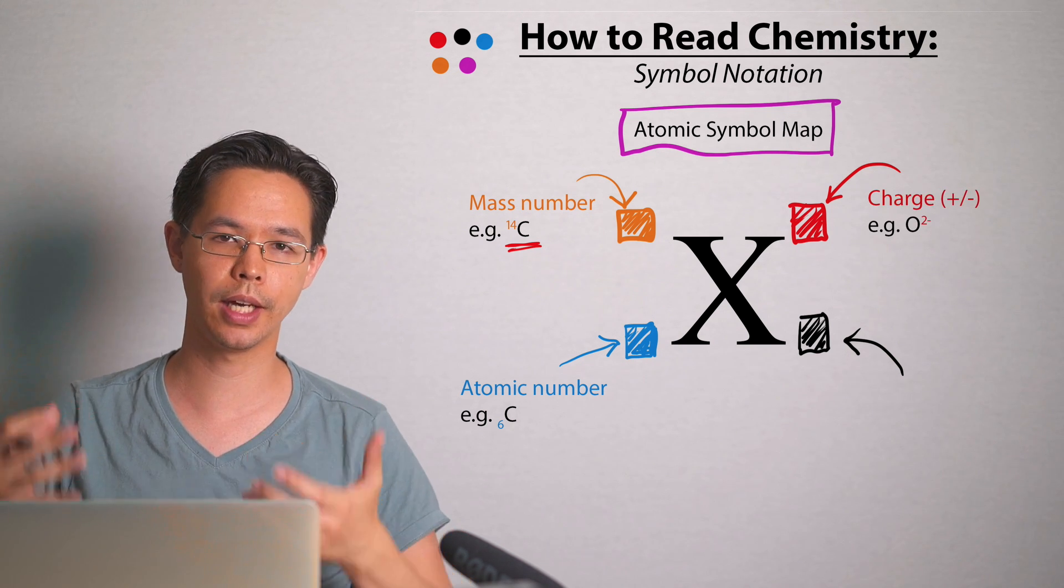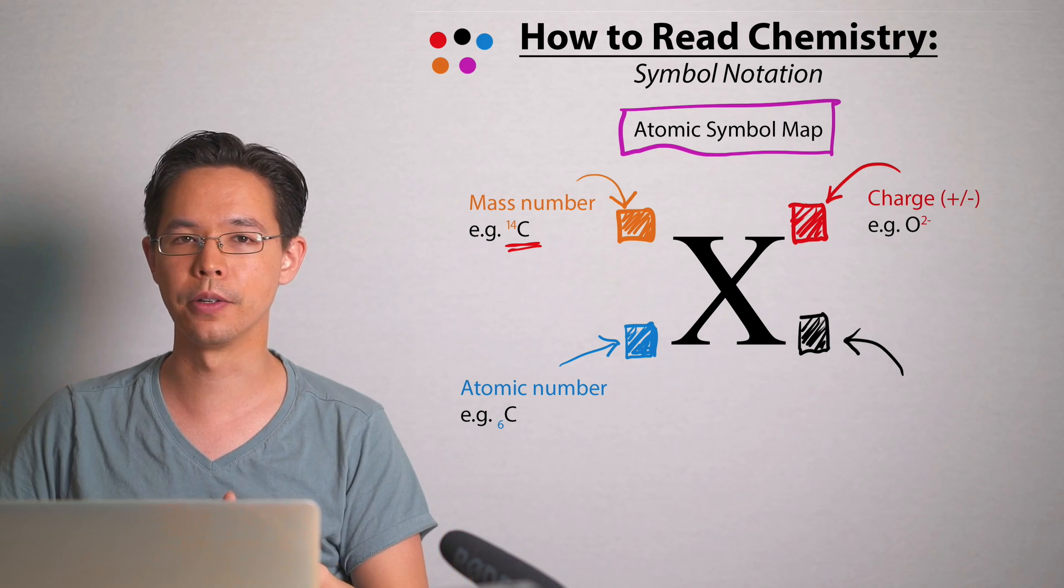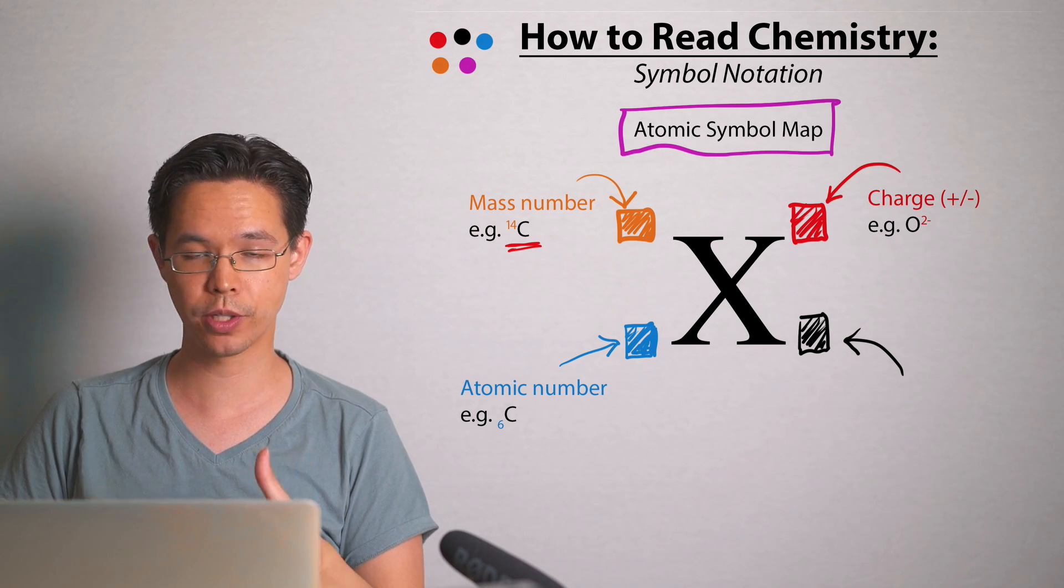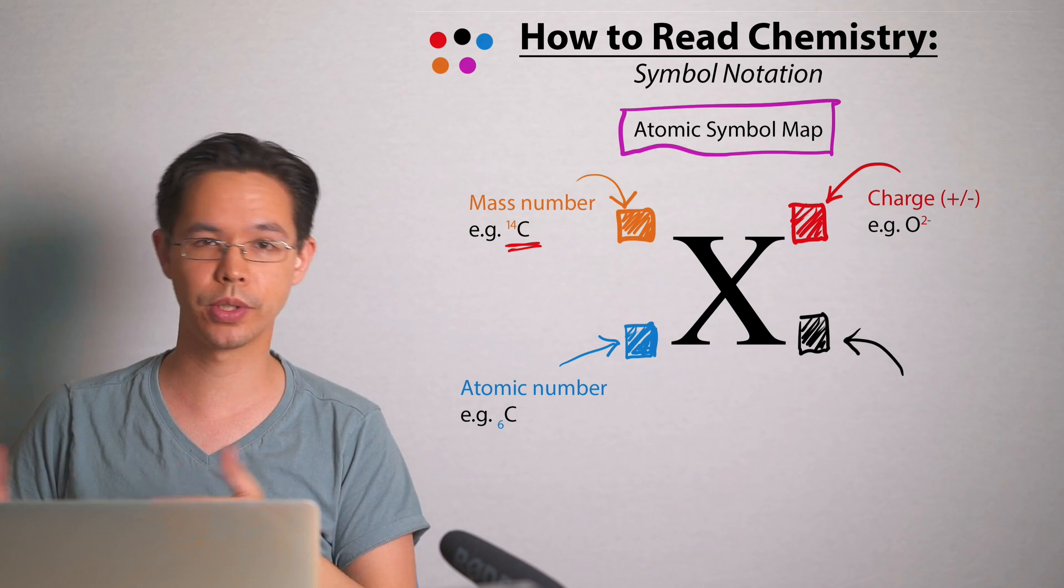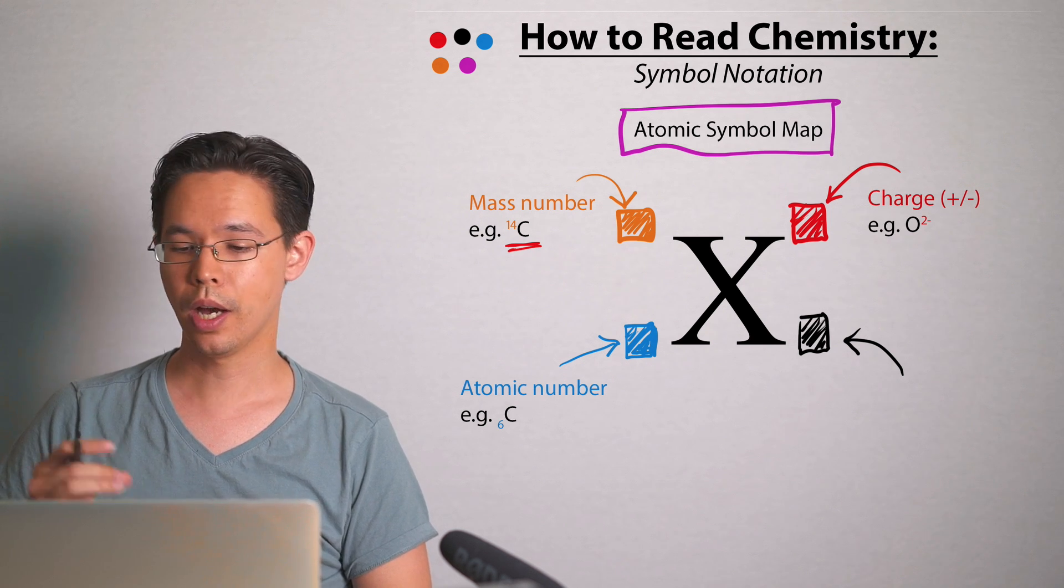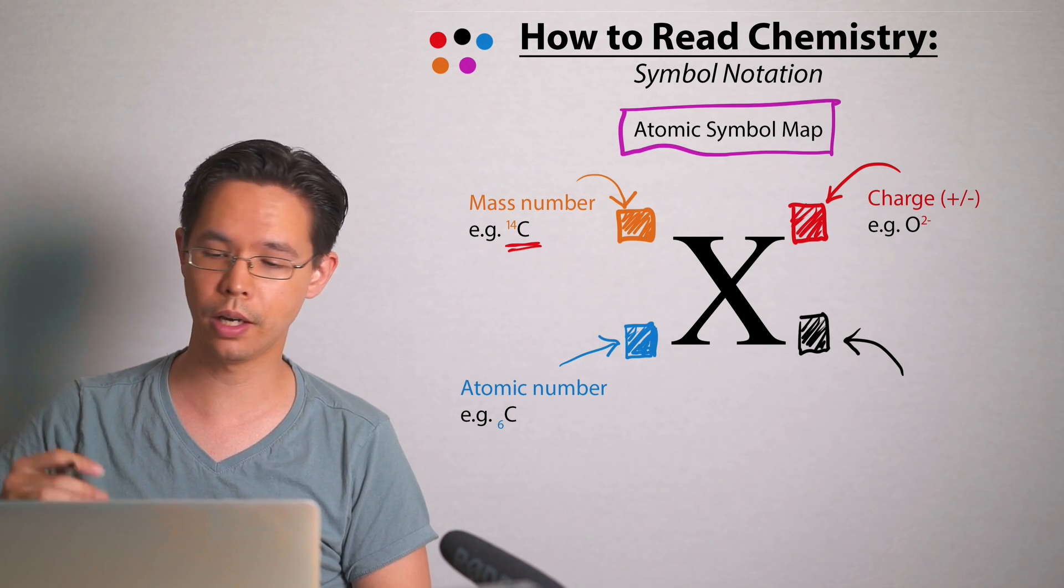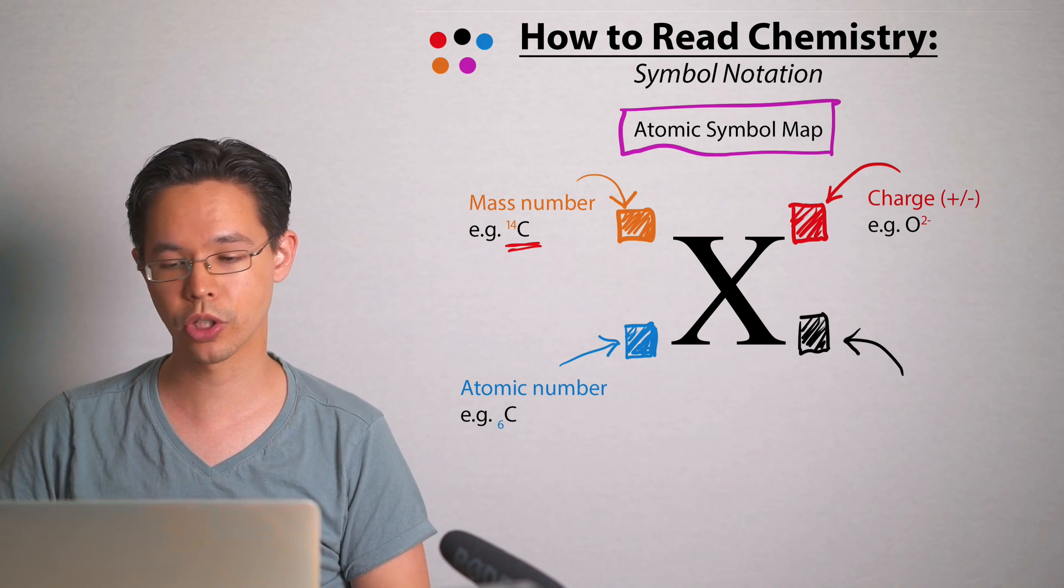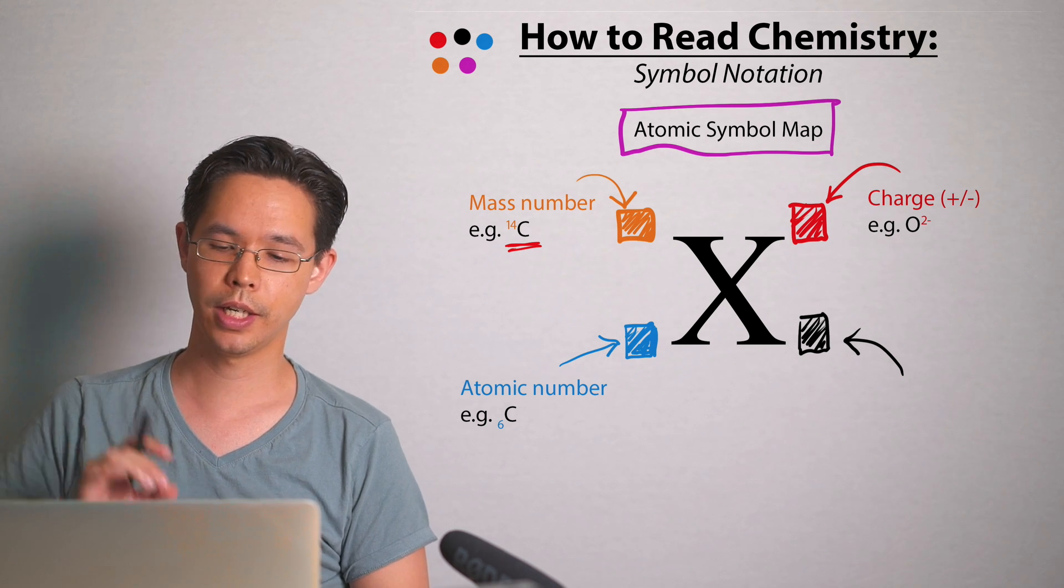The red corner is where you see information about the element or that atom's charge. Some atoms or symbols can be positively charged or negatively charged. In this case, I've got an example here of oxygen. Oxygen becomes an oxide ion and it has a two negative charge, so I've got little notation there in the upper right hand corner to show that.